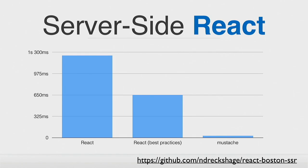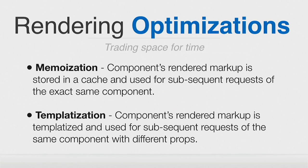We saw this as an opportunity. Running some benchmarks, we compared React to Mustache and Handlebars — our original templating language — and there was a significant performance difference. Even applying best practices on React, we could reduce the time, but not as much as a Mustache template would render on the server. So we started thinking about how we could trade space for time, and came up with two optimizations: memoization (caching) and templatizing.